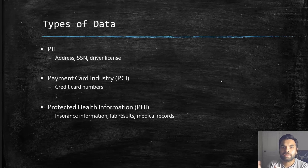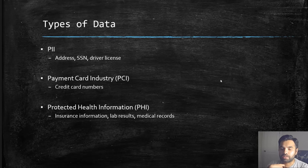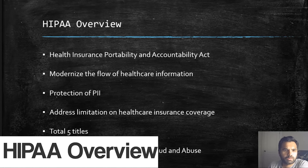Lastly, there is health information. When we go to hospitals, our records are increasingly digital — I actually view all my reports via a software portal. That software portal has to be HIPAA compliant because it stores and processes my health records. Examples of PHI data include insurance information, lab results, and medical records.